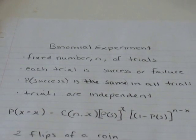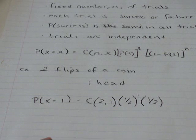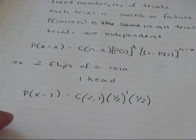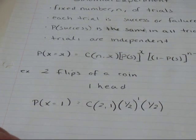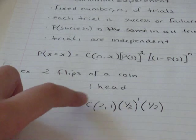I'm going to use this formula to do this example. I already started it and then my camera died, but I'll explain how I got to this stage. Two flips of a coin, and I want one head.